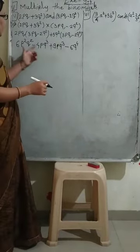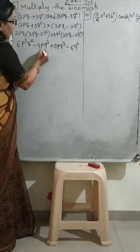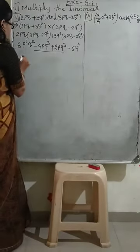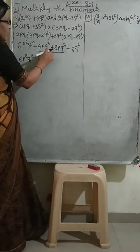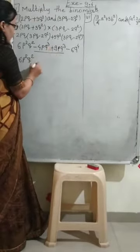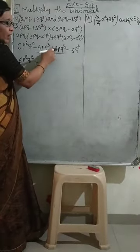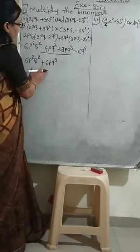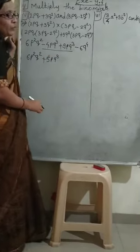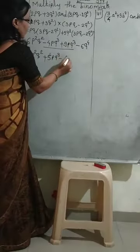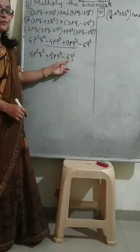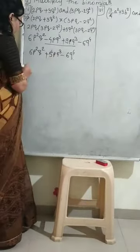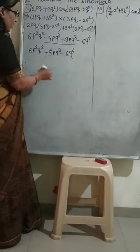Now we check for like terms. We can see the p³q³ terms: minus 4p³q³ and plus 9p³q³ are like terms. The first term 6p²q² stays as it is. For the like terms: bigger number sign is plus, so 9 minus 4 gives 5p³q³. And then minus 6q⁴. Therefore the answer is: (2p³ + 3q²)(3p³ − 2q²) = 6p²q² + 5p³q³ − 6q⁴.